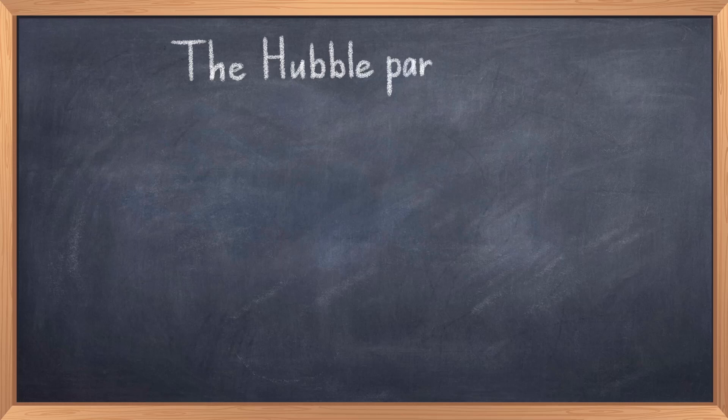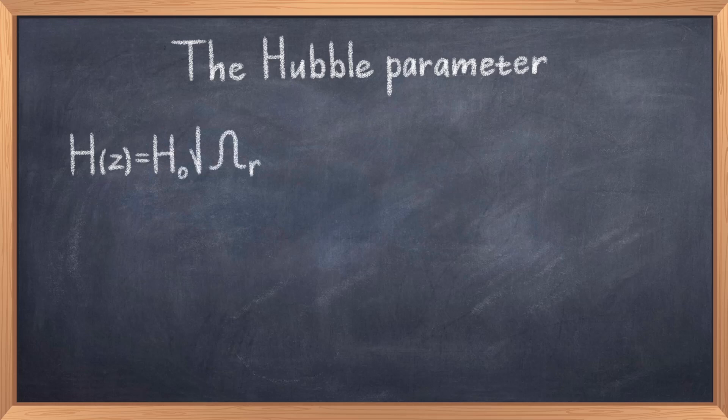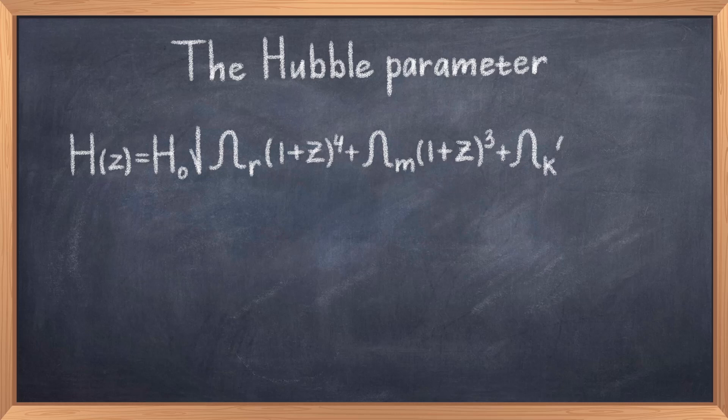Before we can compute anything, we need to get more familiar with what this Hubble parameter is so we can do the integration. By considering the Friedman equations, we can write the Hubble parameter in terms of redshift as: H equals H₀ times the square root of Ω_r times (1+z)⁴ plus Ω_m times (1+z)³ plus Ω_k times (1+z)² plus Ω_λ, where H₀ is the present day value of the Hubble parameter.